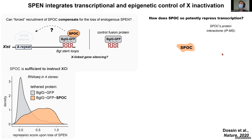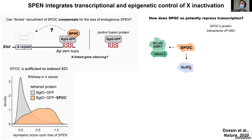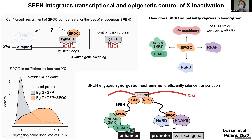To understand how SPOC so potently represses transcription, we performed immunoprecipitation of SPOC followed by mass spectrometry to characterize its protein interactome. We found several protein complexes, including the NCoR-SMRT complex known to activate Histone Deacetylase 3, the NuRD complex involved in transcriptional silencing, the whole m6A RNA methylation machinery, and most importantly RNA Polymerase II itself. We proposed that SPEN, through its SPOC domain, engages multiple mechanisms simultaneously to efficiently silence transcription.